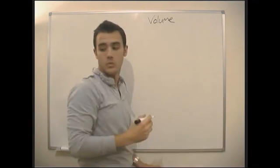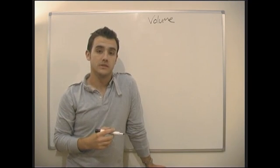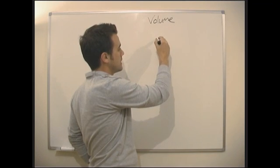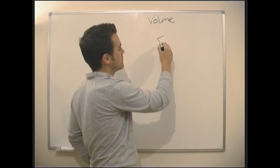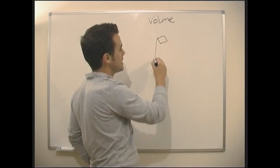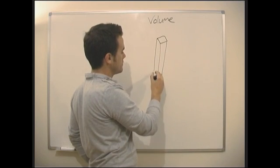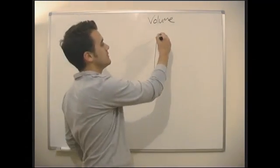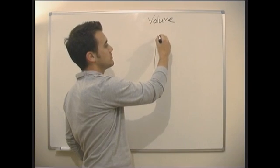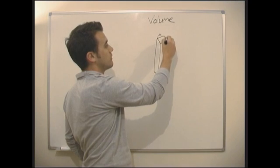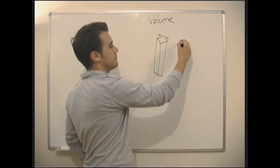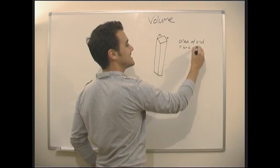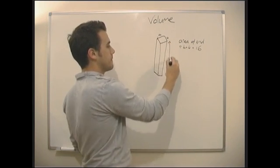Prisms are something we are always interested in. So, a prism is basically something that has an end, that might be a square, and it's then got a depth. So, that would be called a square-based prism. And the way we work out the volume of it, is we work out the surface area of the top, so in this case, it's going to be 4 times 4, which is going to be 16.